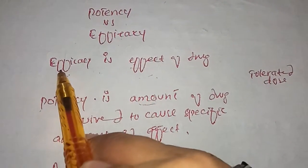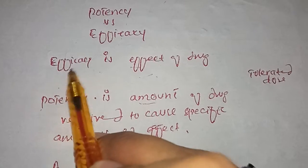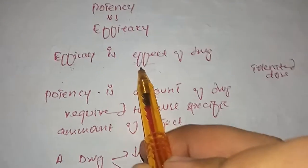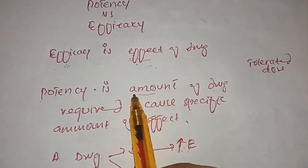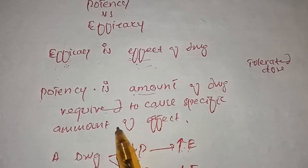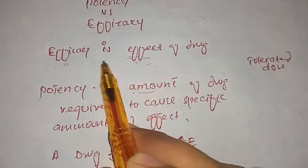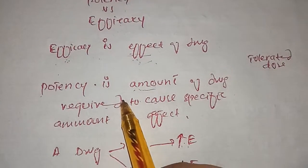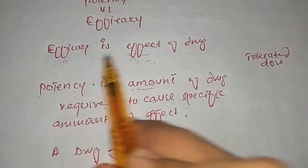Just remember this pronunciation: efficacy is effect. It is the effect of the drug. And potency is actually the amount of the drug needed to cause a specific amount of the effect. So we have certain effects, and in order to achieve those effects we need a specific amount of the drug. Potency is amount, efficacy is the effect.